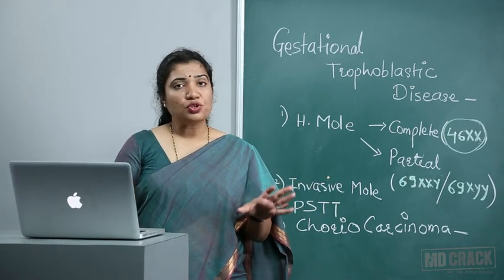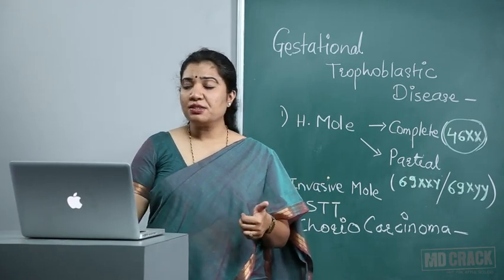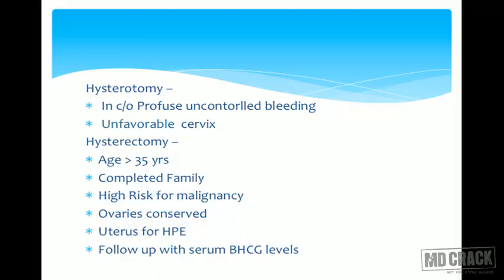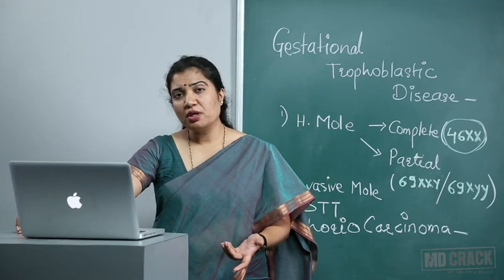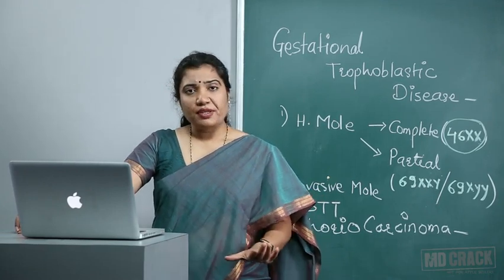An alternative treatment modality is hysterotomy — opening the uterus with an incision to evacuate the cavity — but this is very rarely done. Indications are profuse uncontrolled bleeding leaving no time for suction, or an unfavorable cervix that cannot be dilated sufficiently to insert the suction cannula.